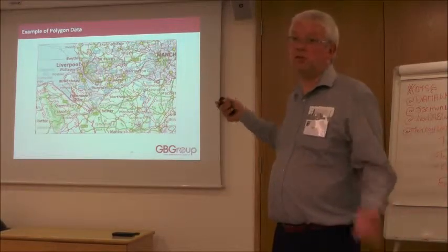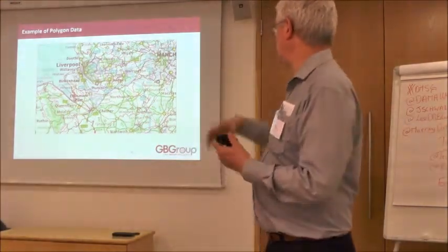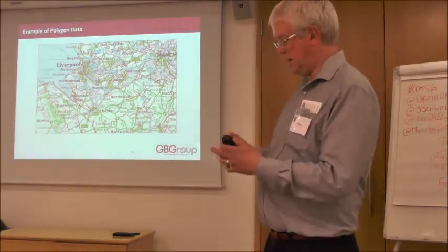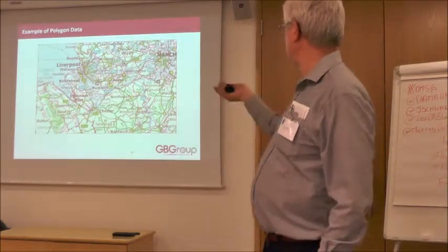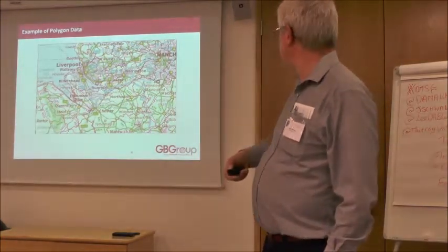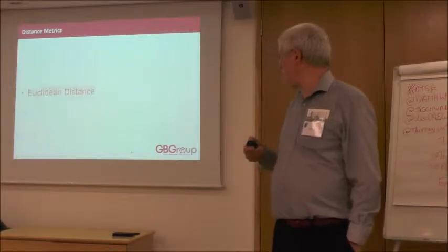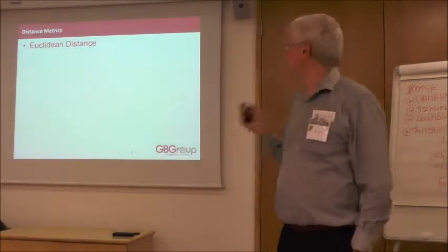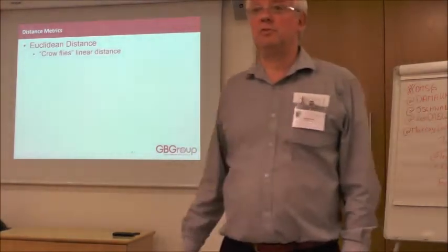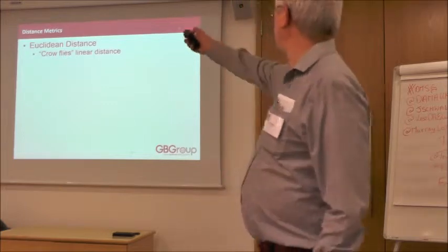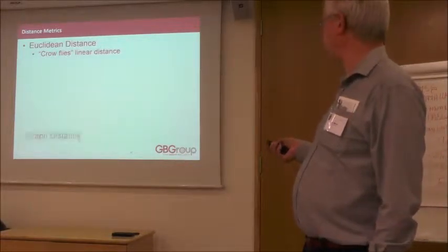If you store the underlying polygon data in a database with a spatial data type, maps are just a way of visualising it. You can query 'where's this point?' and it will return results from a point in polygon query. Distance metrics: Euclidean distance sounds very posh, but it's basically Pythagoras' theorem — the crow-flies linear distance between two points, the direct distance. Graph distance takes networks into account — the road or rail distance from one point to another.